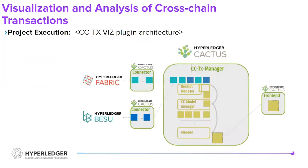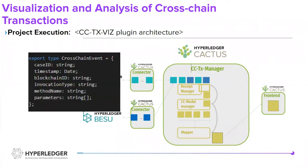Next, we have the architecture of our plugin. Practically, we extended the Fabric and Besu connectors to send the transaction receipts to our plugin via RabbitMQ, which is an open-source message broker based on a subscriber-publisher pattern. In our plugin, we get the receipts and transfer them into cross-chain events, which include a timestamp, a blockchain ID (the ledger type), the invocation type (the smart contract function), parameters (the smart contract parameters), and the case ID, which helps us identify transactions that are part of the same cross-chain transaction. At the moment, the case ID is provided by the user.